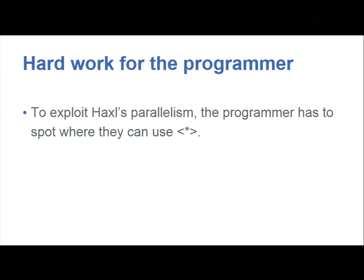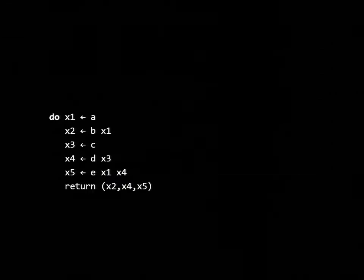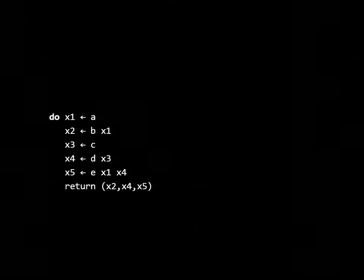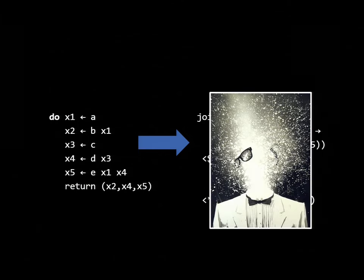So in order to exploit parallelism here, the Haxl programmer is going to have to figure out where they can use the applicative operator. Okay, we're all experienced Haxl programmers. We can probably do that on examples like this. But it can get pretty difficult. Here's another example. In this example, we've got a sequence of statements, and there are some dependencies between them. For example, B is applied to X1. X1 comes from the first line. On the fourth line, I've got X3 coming from the third line. And finally, I've got a dependency on the first line and the fourth line. It turns out that the best way to translate this into applicatives looks something like this. If the programmer has to do this on a regular basis, their head is going to explode.